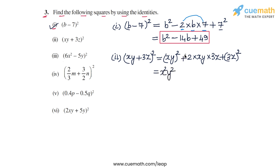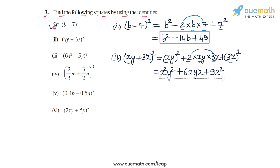For the middle term, 2 times xy times 3z: since 2 times 3 is 6, we get 6xyz as the second term. Then 3z whole square becomes 9z squared. So the expression x squared y squared plus 6xyz plus 9z squared is the answer for part 2.